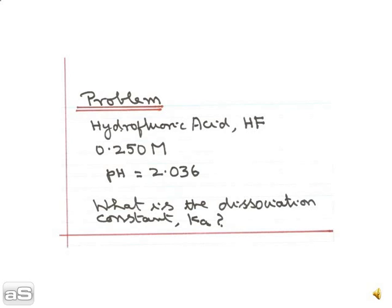In our example, we are taking hydrofluoric acid, HF. We are given that the concentration is 0.25 molar and the pH value of this solution is 2.03. Given these two values, we are asked to calculate the dissociation constant Ka of hydrofluoric acid.